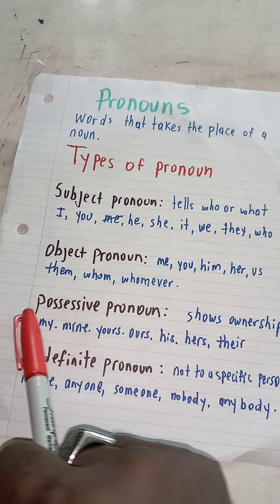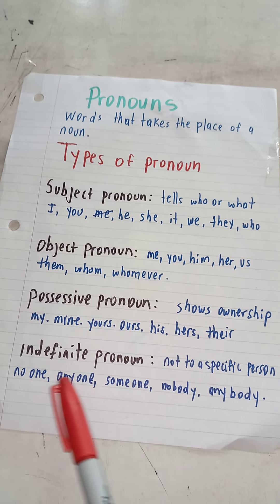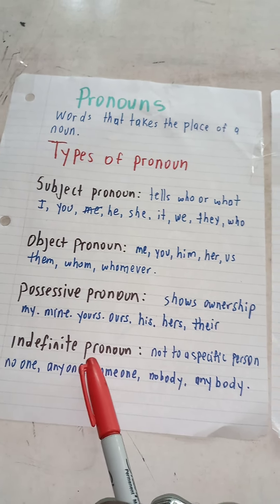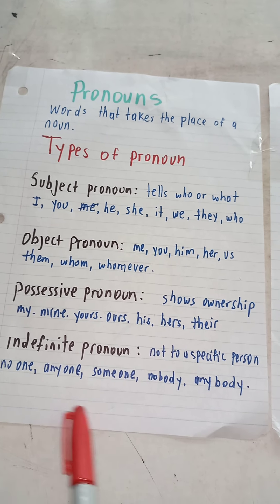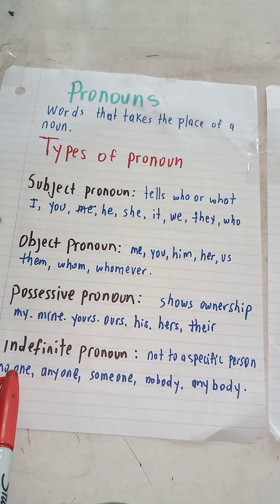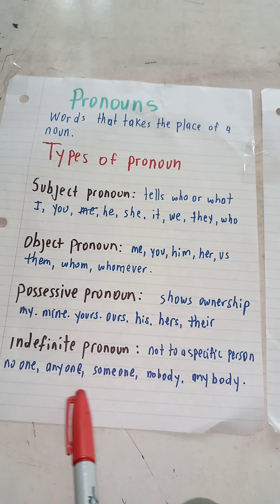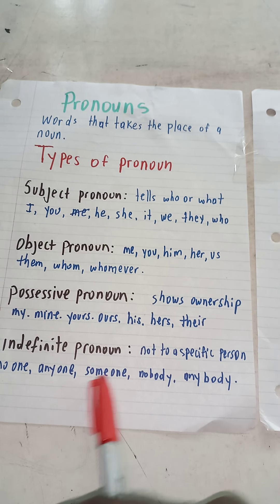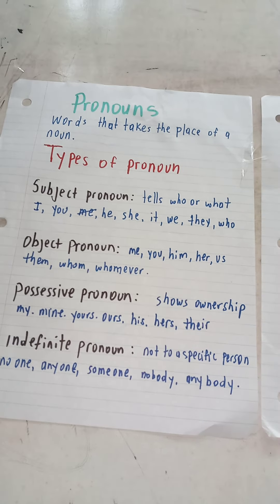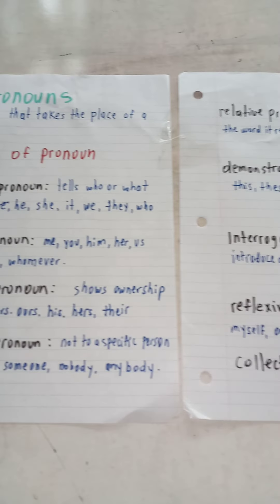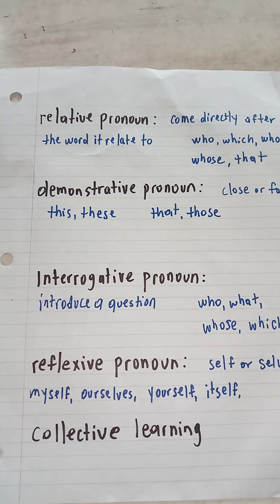We use possessive pronouns to show possession — meaning it is yours, it belongs to you. These are the possessive pronouns we use. Indefinite pronouns do not refer to a specific person — you could say anyone, no one, someone, nobody, anybody. Those are indefinite pronouns.